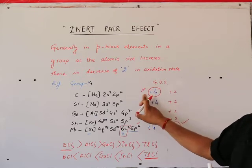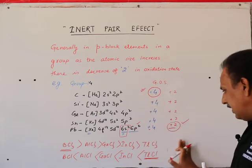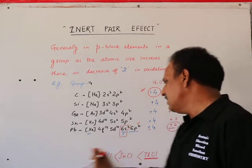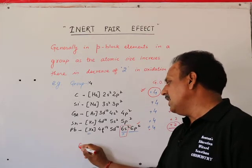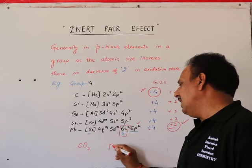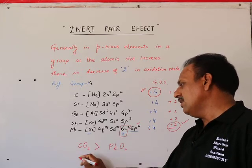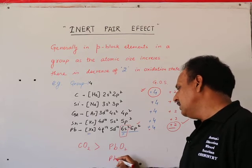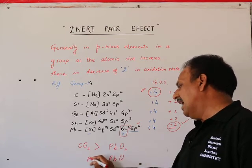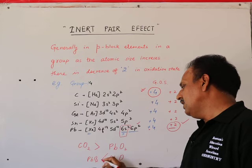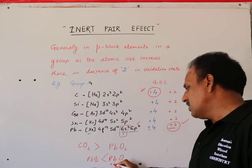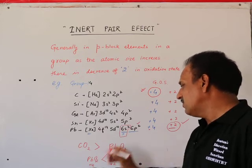Carbon has high +4 tendency. Comparing carbon dioxide and lead dioxide: CO2 is most stable with carbon in +4, while for lead, PbO (lead monoxide, +2) is most stable.